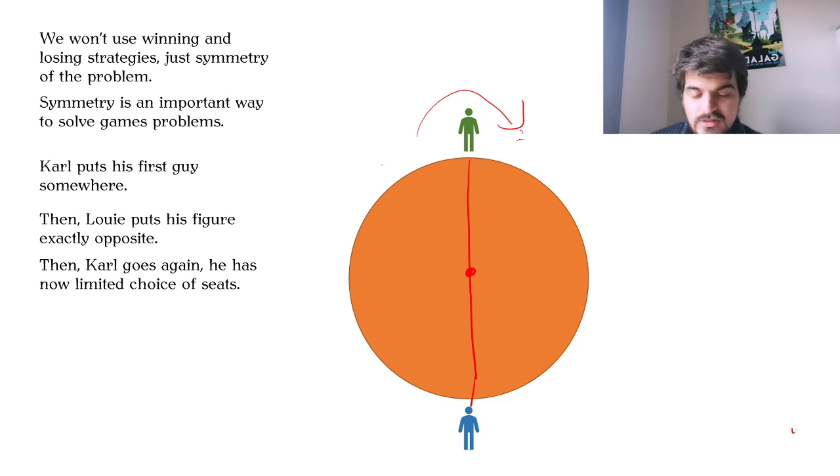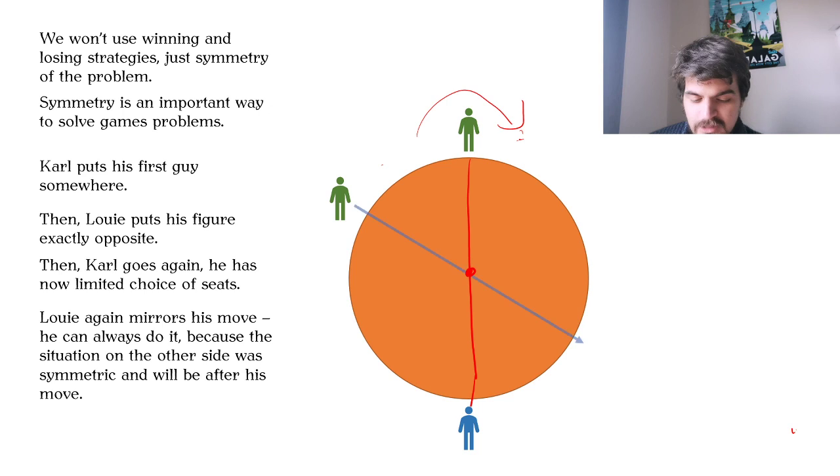Carl has to make some choice, so he puts his guy here. Now the thing is that Louis will then mirror his move on the other side, going through the center. And why? First of all, if there is no one sitting here then Carl can put his guy here. But if we assume that the situation is symmetric at the beginning of Carl's each move, that means that there is also not anyone sitting here. So Louis can also put his guy here.